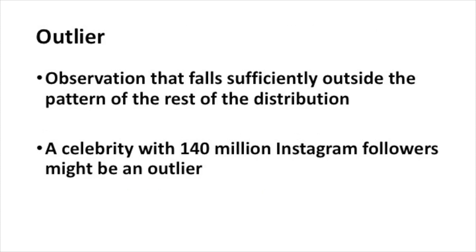An outlier is an observation that falls sufficiently outside the pattern of the rest of the distribution. So a celebrity with, say, 140 million Instagram followers might be an outlier.